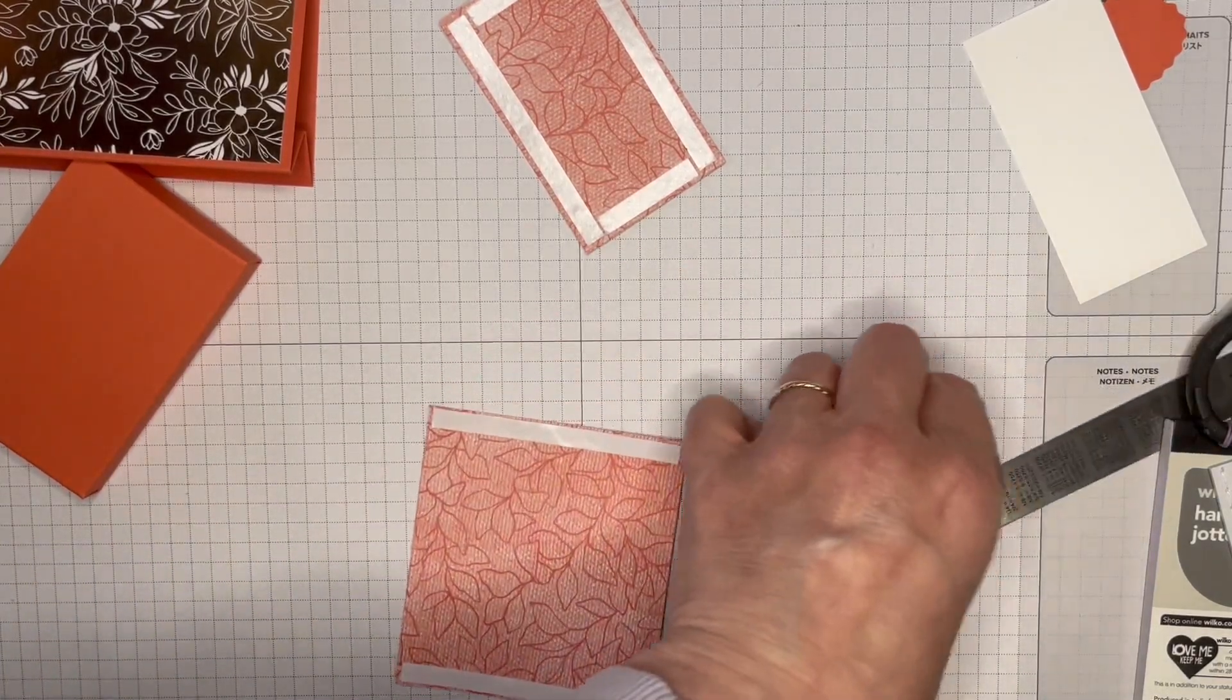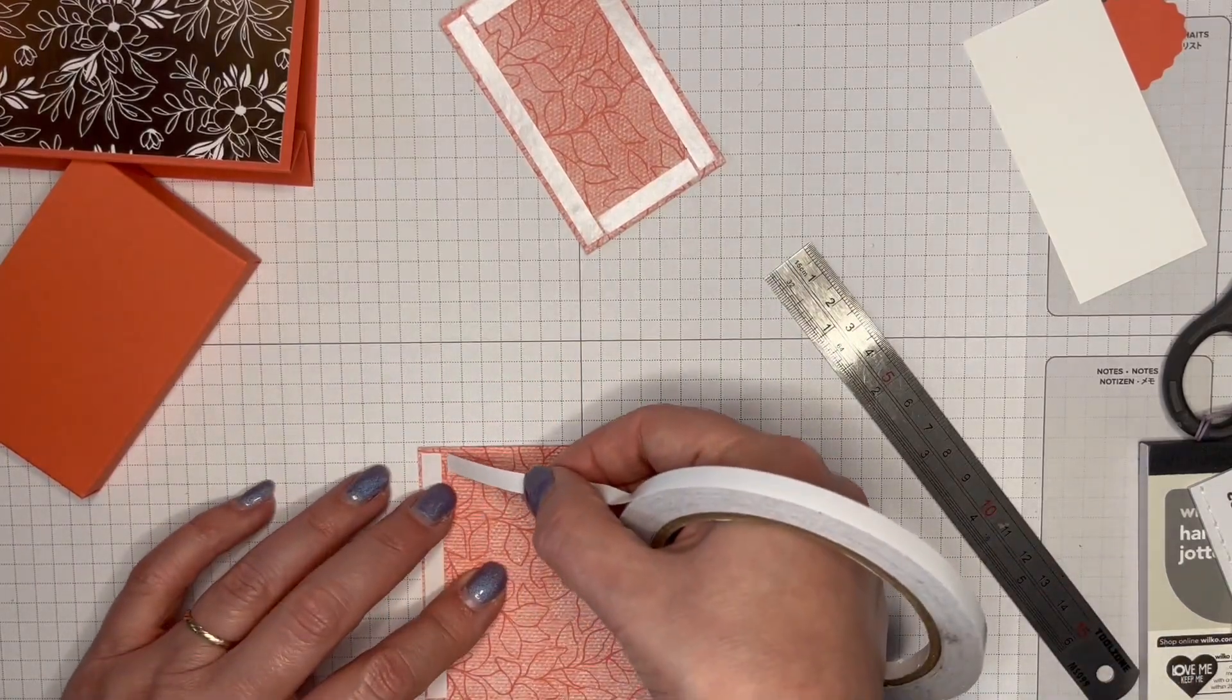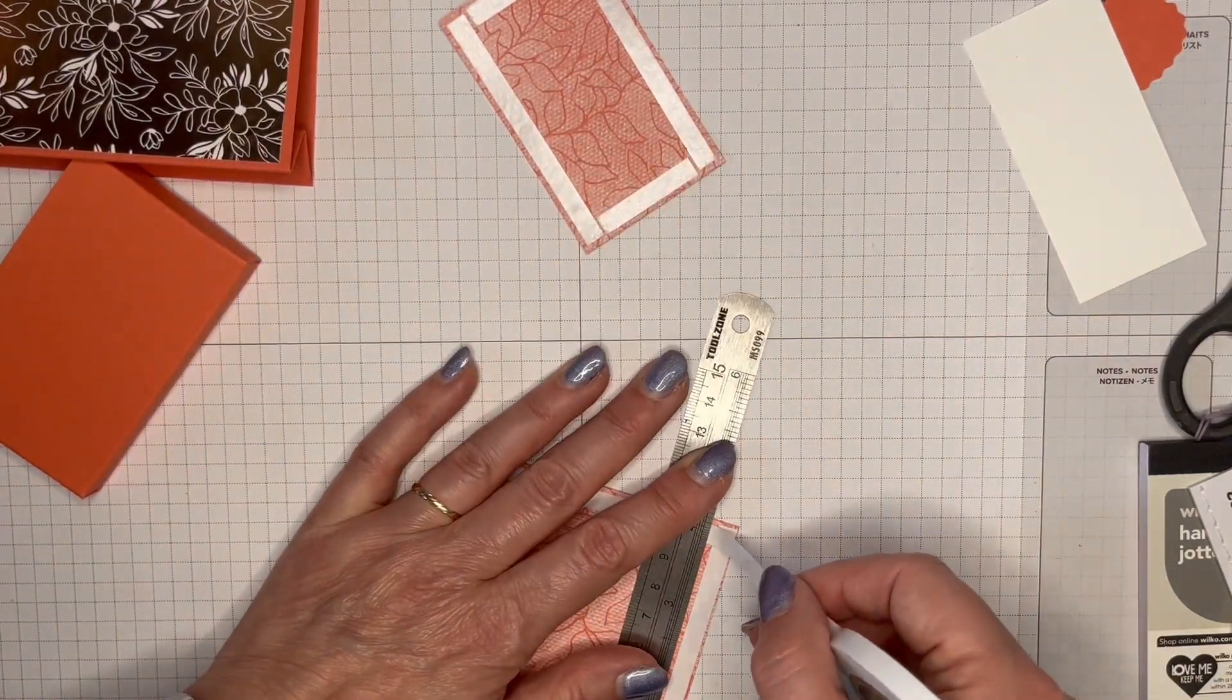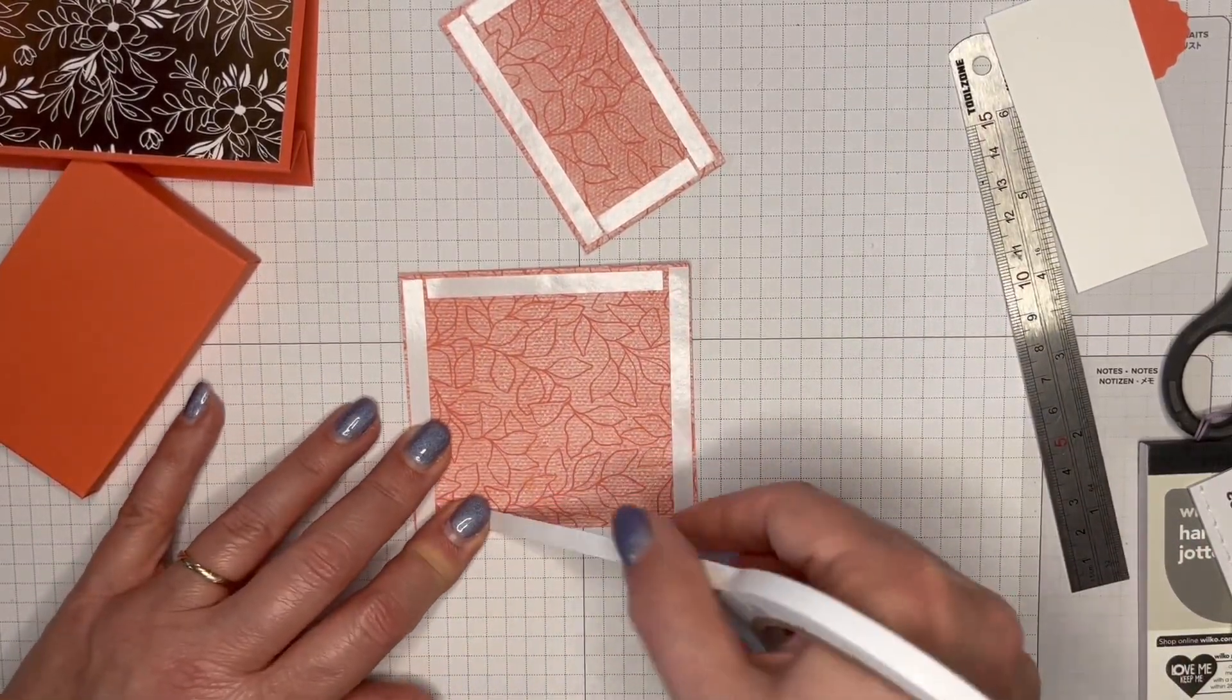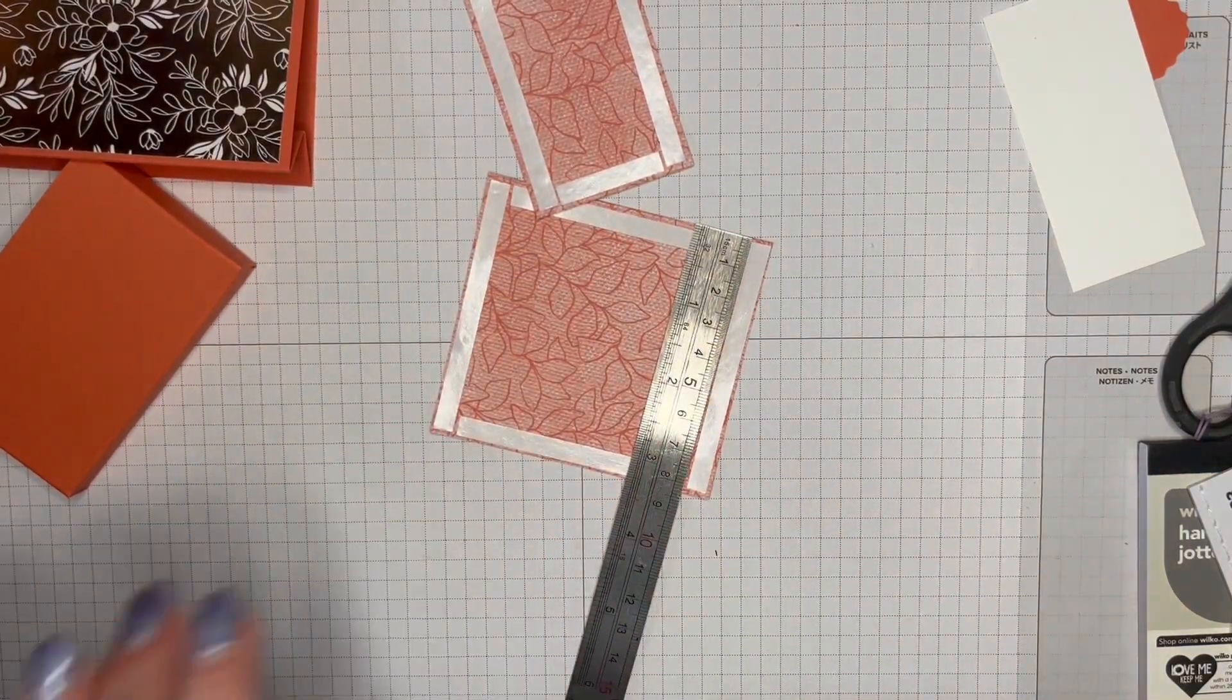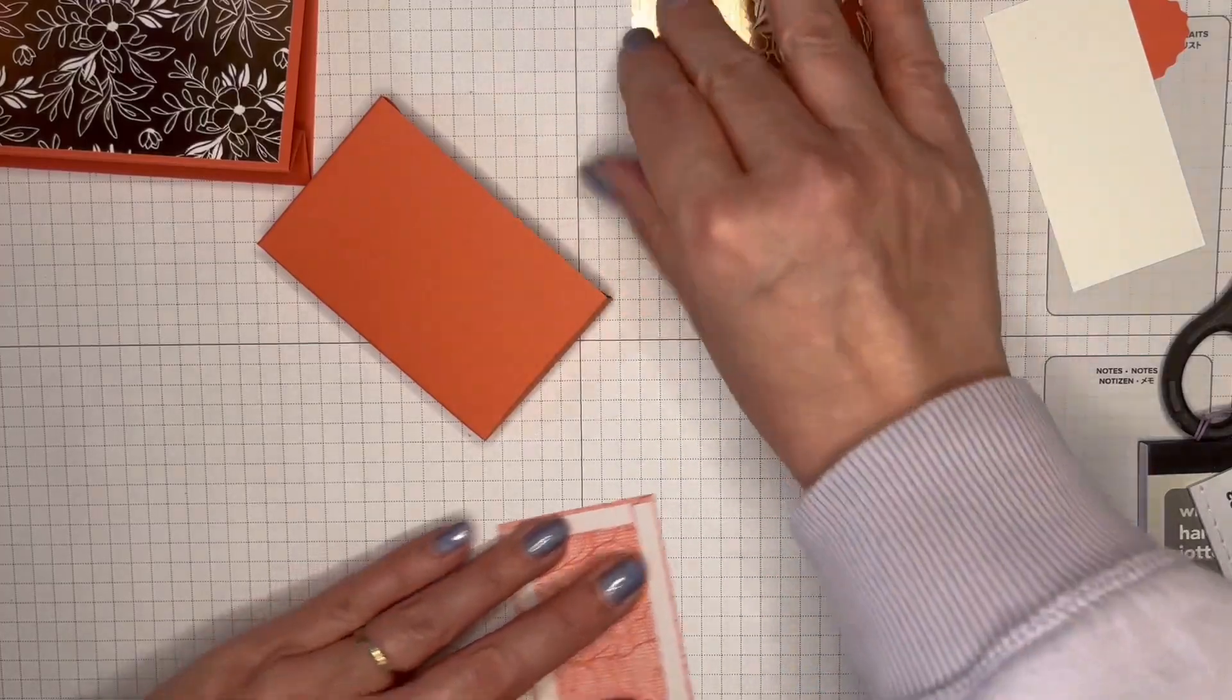The details will be in my blog post with all of the measurements and the products that I'm using. There'll be a link to that blog post in the description for this video. There'll also be links to my online shop should you wish to purchase any of the products that I'm using today. The notepads I buy in Wilco in the UK, and they are super cheap. They are normally 50 pence each, but quite often Wilco will do an offer where you can buy three for a pound. And whenever that offer's on, I stock up because they make nice little gifts.